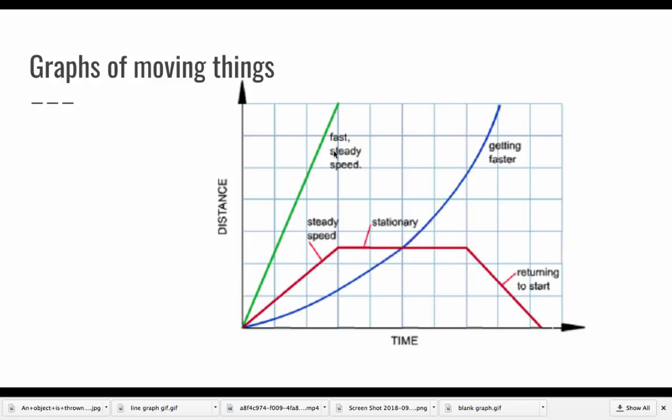That is a fast speed, and it's a steady constant speed. That's why my line is straight. Constant speed or the same type of speed should be a nice straight line.